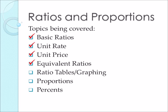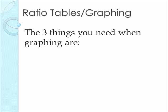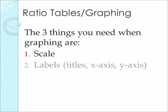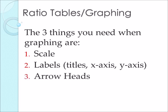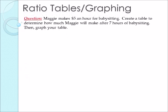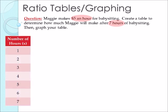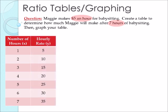Our next topic will be ratio tables and graphing. Do not forget the three things you need when graphing: scale, labels such as your titles and x-axis and y-axis, and arrowheads. Maggie makes $5 an hour for babysitting. Create a table to determine how much Maggie will make after 7 hours of babysitting, then graph your table. She makes $5 per hour. We write down the number of hours as our x values. For 1 hour she makes $5, for 2 hours $10, for 3 hours $15, and so on.